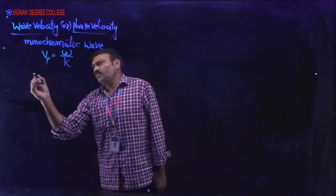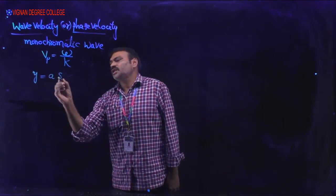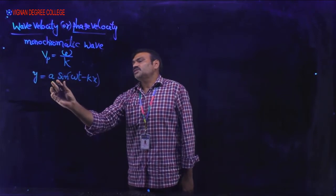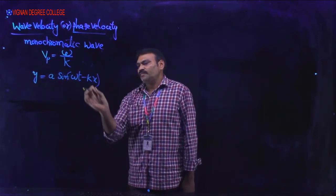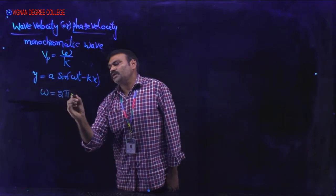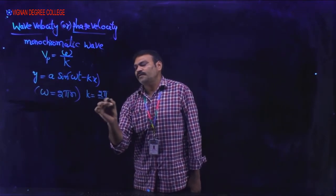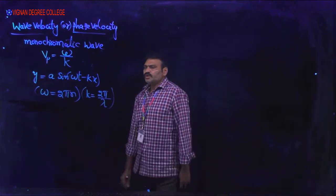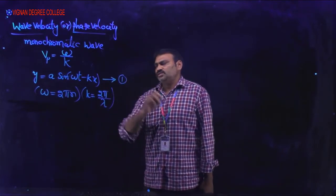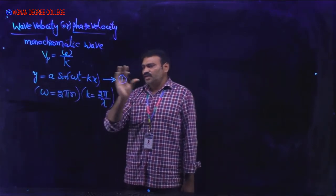Consider a wave whose displacement is given by y = A sin(ωt − kx). Here A is the amplitude, omega is the angular frequency, and k is the propagation constant. Angular frequency omega equals 2πn, and propagation constant k equals 2π/λ. This is the general wave equation, equation number 1.